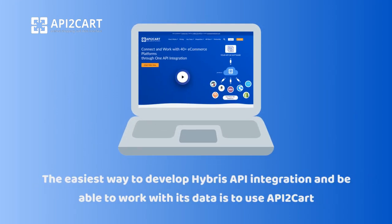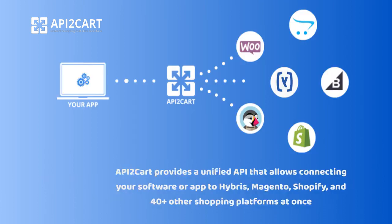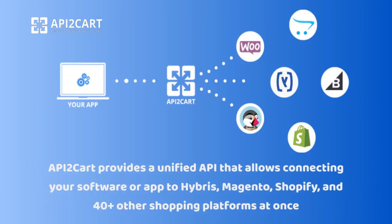The easiest way to develop Hybris API integration and work with its data is to use API2Cart. API2Cart provides a unified API that allows connecting your software or app to Hybris, Magento, Shopify, and 40-plus other shopping platforms at once.